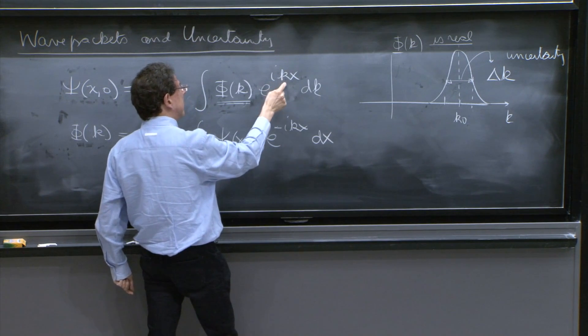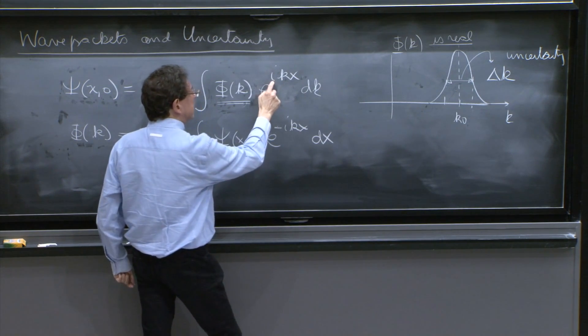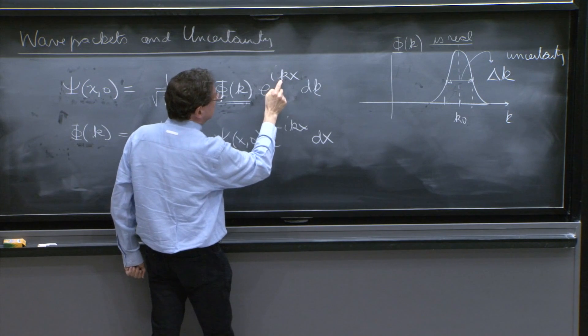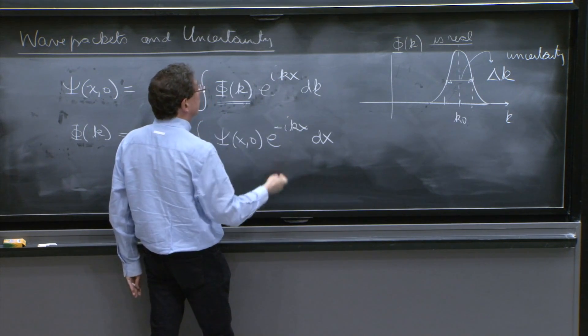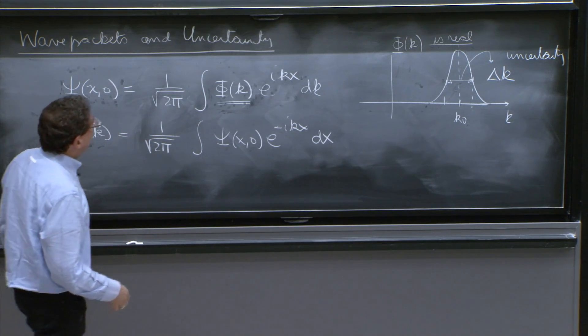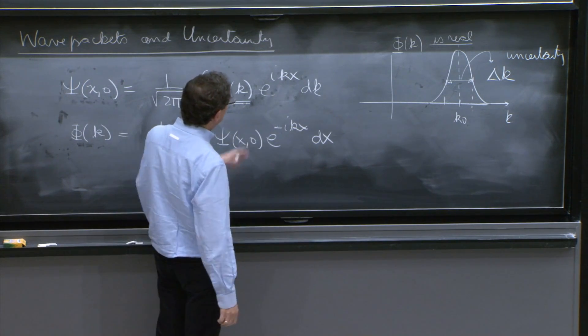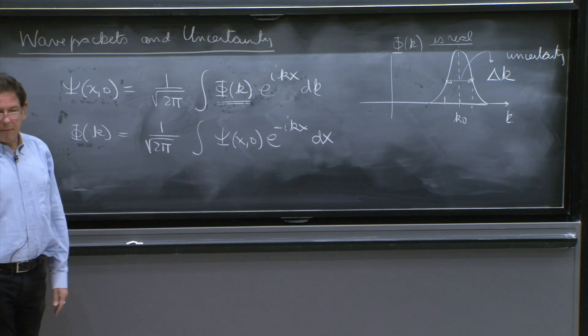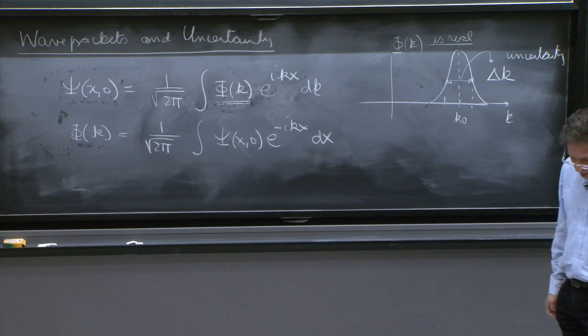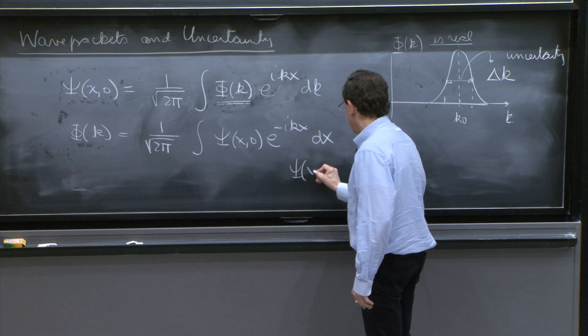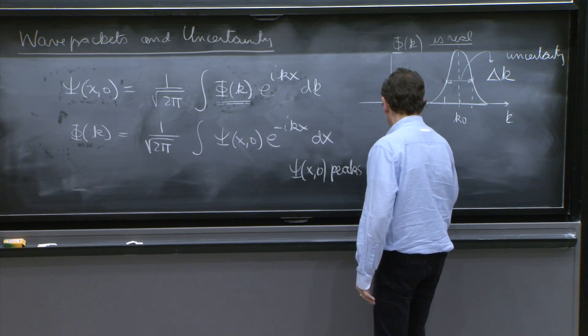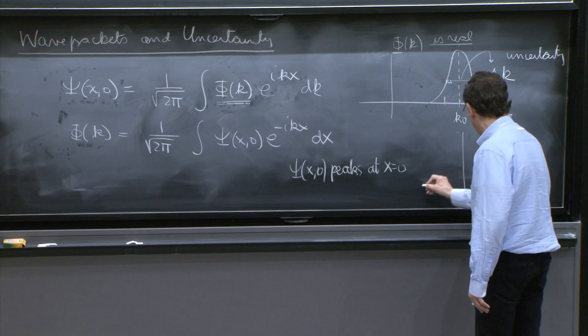And the phase must be stationary as a function of k, because you're integrating over k. And the phase is kx. The derivative with respect to k of the phase is just x, and that must vanish, therefore. So you expect this to be peaked around x equals 0. So the x situation, so ψ of x0 peaks at x equals 0.